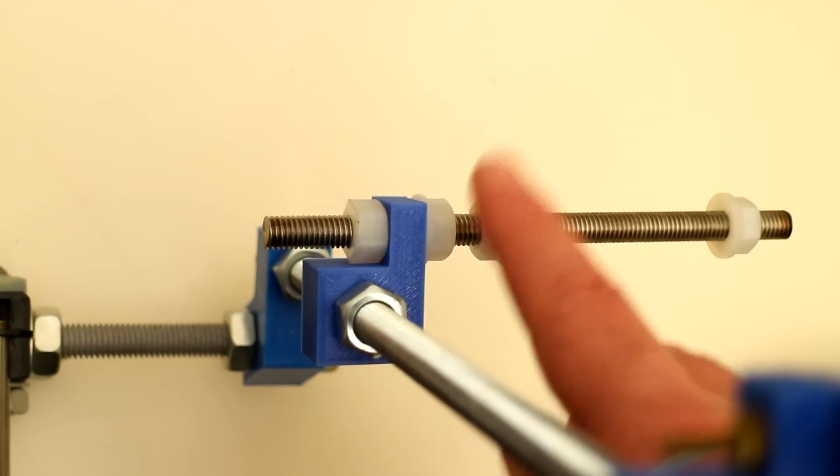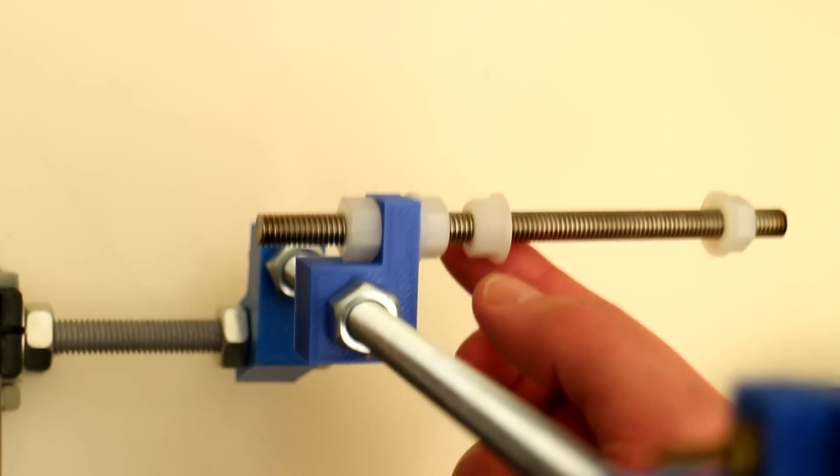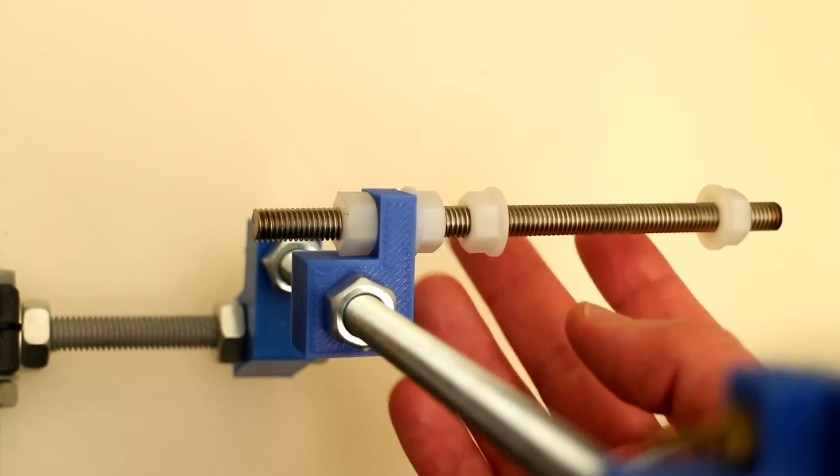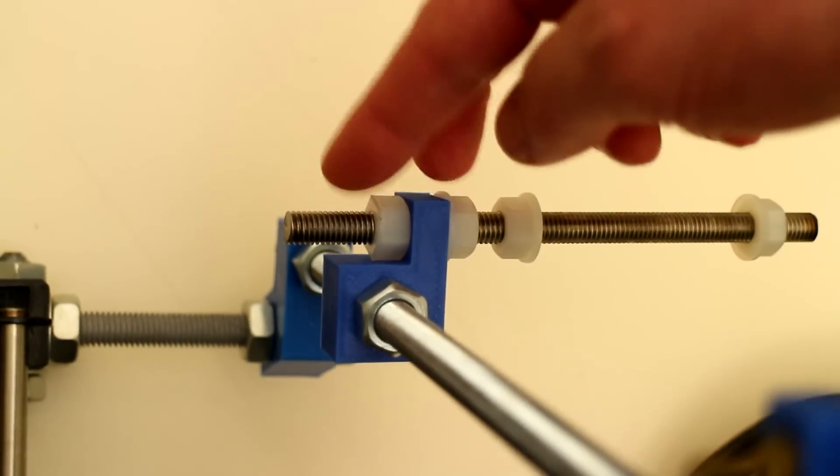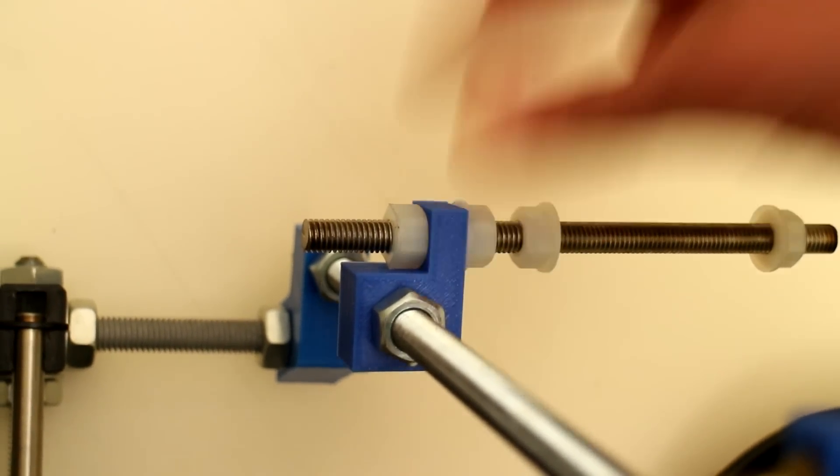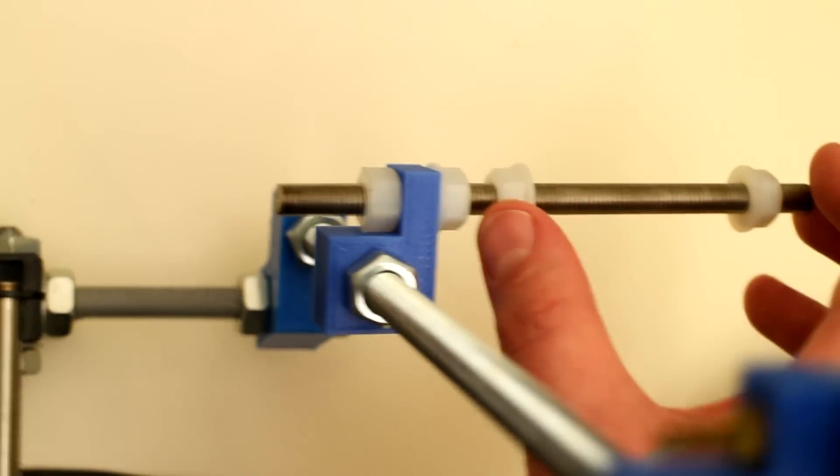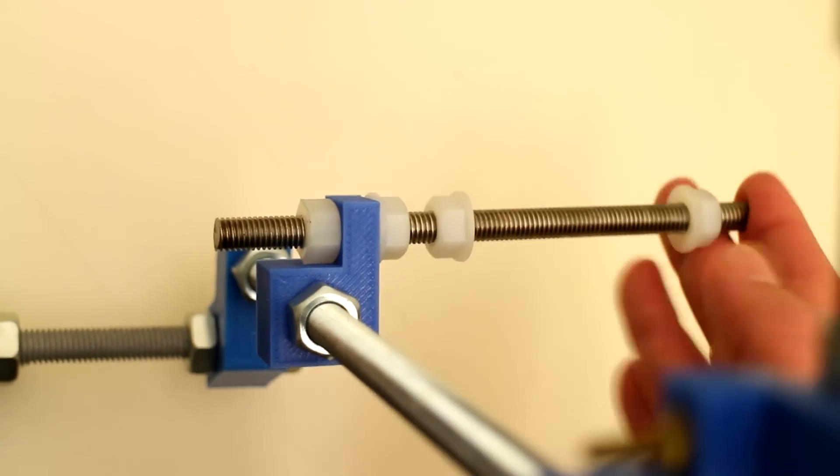I also have four nuts attached to this rod. Now these are nylon nuts. These are nuts that I had lying around but you can just use standard steel nuts. I'm using two of the nuts to clamp this rod to the block and the other two nuts I'm using to bind or clamp the filament onto the axle.